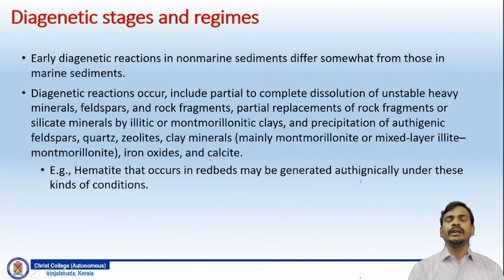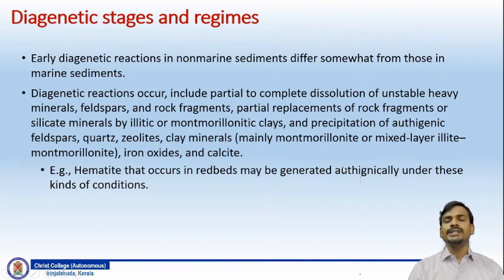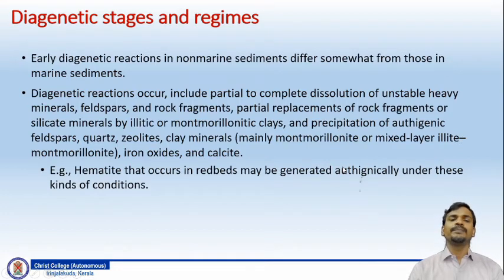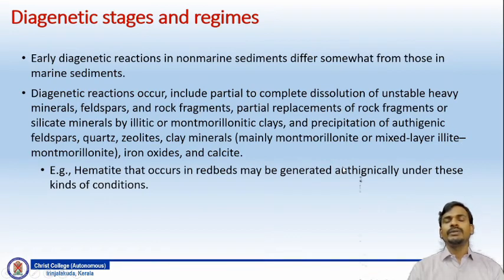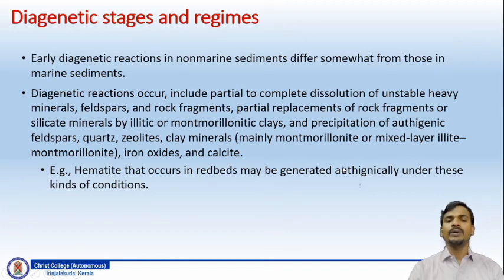The eogenetic reactions in non-marine sediments differ from those in marine sediments. These reactions include partial to complete dissolution of unstable heavy minerals, then feldspars and rock fragments, partial replacement of rock fragments or silicate minerals by illite or montmorillonite clay, and precipitation of authigenic feldspars, quartz, zeolite, and clay minerals — mainly montmorillonite or mixed-layer illite-montmorillonite. You also have iron oxides and calcite.